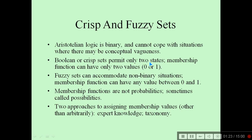Crisp sets versus fuzzy sets: Boolean or crisp sets permit only two states, that is zero or one. But fuzzy sets can accommodate non-binary situations using membership functions — that is, values between zero and one. It is not always possible that the switch is on or off; sometimes it may be lying in between. This situation is fuzzy. Membership functions are not probabilities; sometimes they are called possibilities. Two approaches are used to assign membership values: expert knowledge and taxonomy.